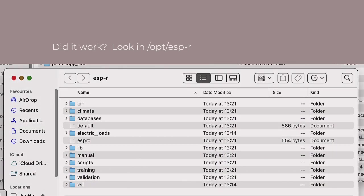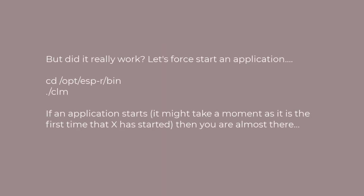If the extract process worked well, use the file manager, go and look in /opt/espr, and you'll see a bunch of folders. To check if it actually worked, we want to try to start one of the applications. Go into the bin folder and execute clim. We do ./clim, and that forces it to use that specific executable in that specific folder.